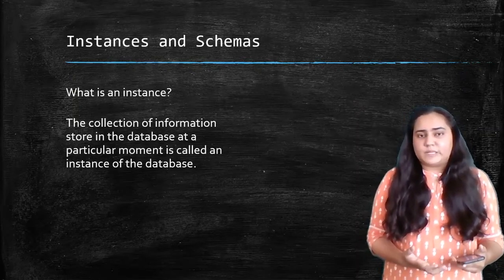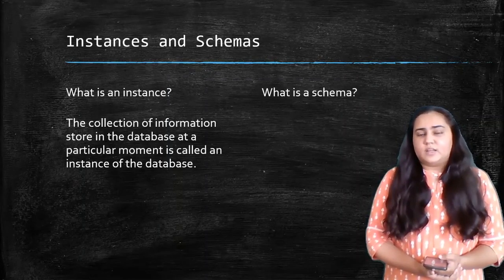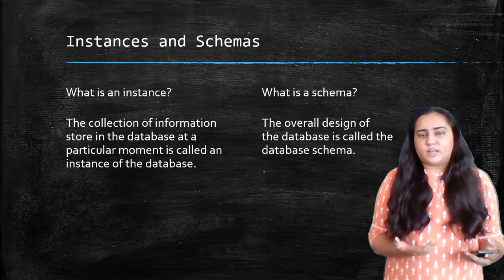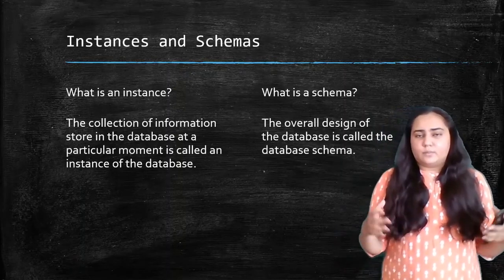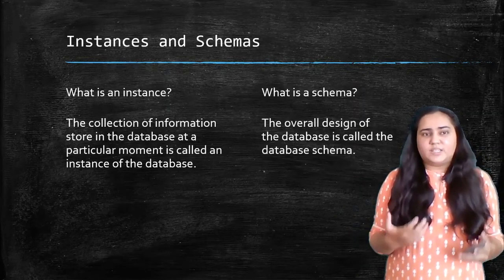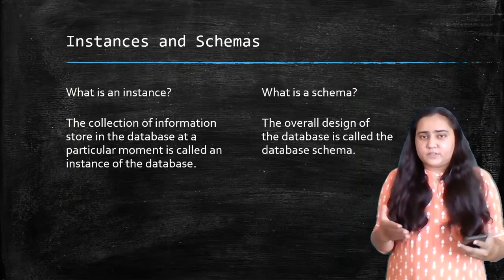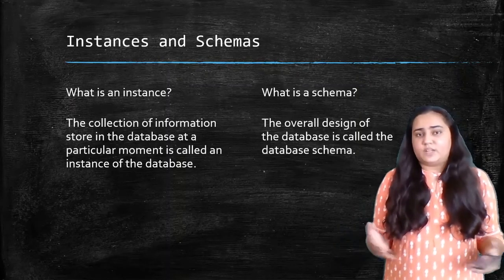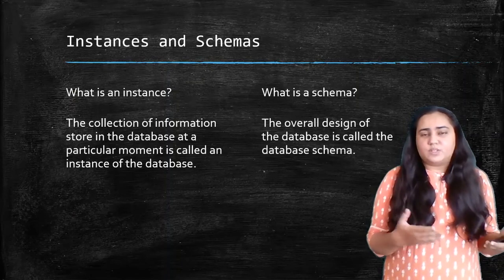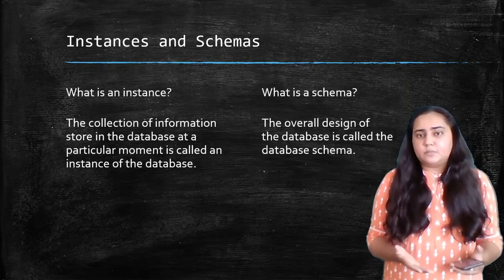A schema is the overall design of the database — whatever tables are present, what columns they have, what their data types are, and how much data can be stored. For example, if there is a column called address, how many characters can it store? All this information about the tables, columns, and data types together forms the design, the schema of the database.